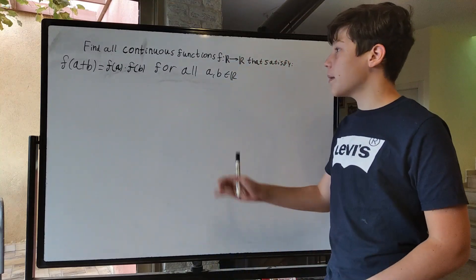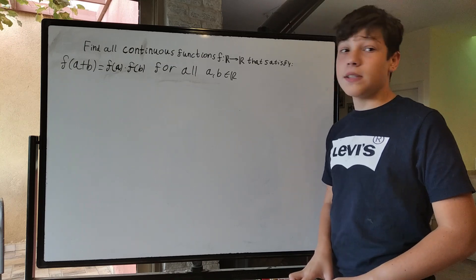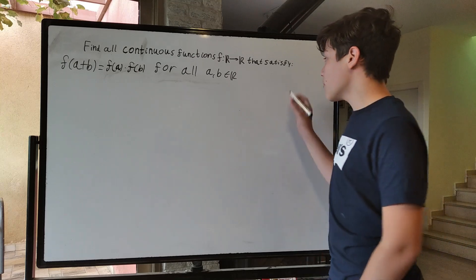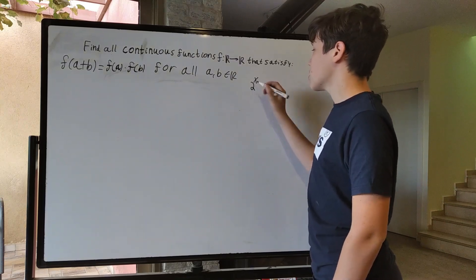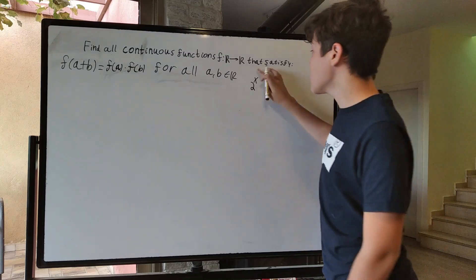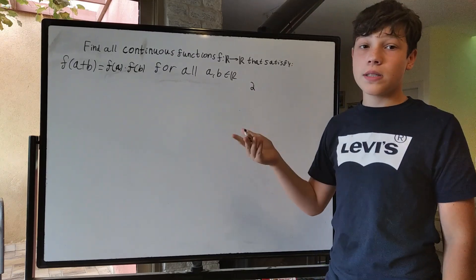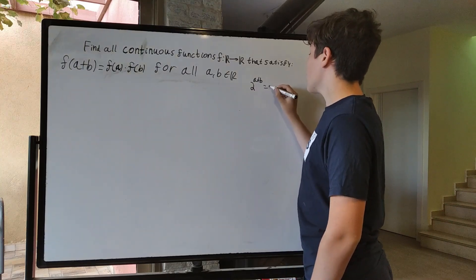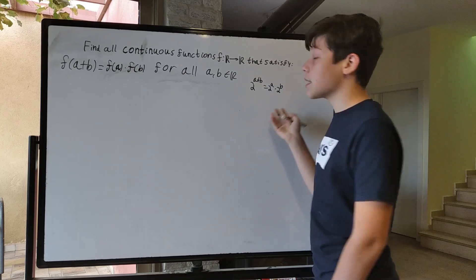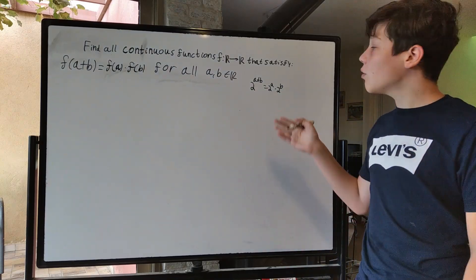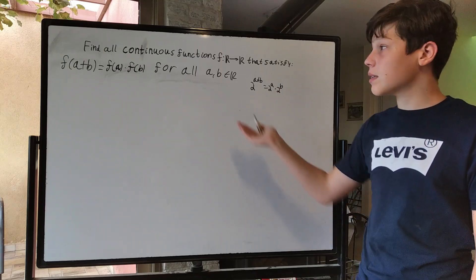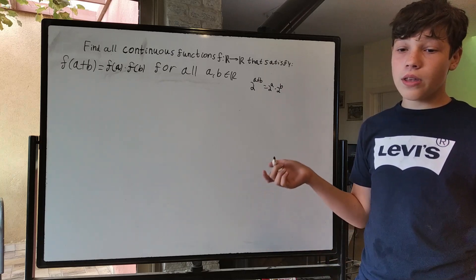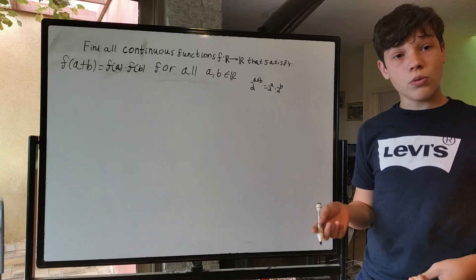You may have heard about this problem before, and you may have seen a solution — something like 2 to the x could be a function that satisfies this, because the power of the sum is the product of the powers. So if we have 2 to the a plus b, we know this equals 2 to the a times 2 to the b by exponent rules. We know all functions of this sort satisfy this property, but the question is: are they the only ones that do?